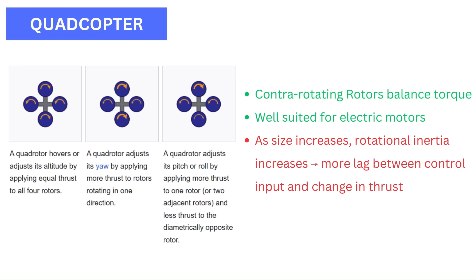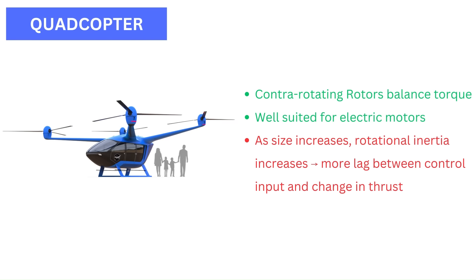Effective control requires rapidly changing the thrust of the propellers. However, as the quadcopter becomes larger in size, the motors and propellers also become bigger and they have more rotational inertia. This means there is a larger lag time between pilot input and change in thrust.